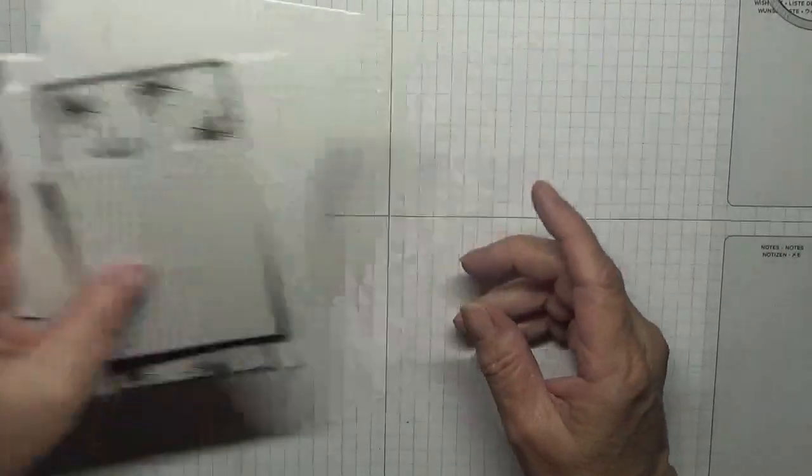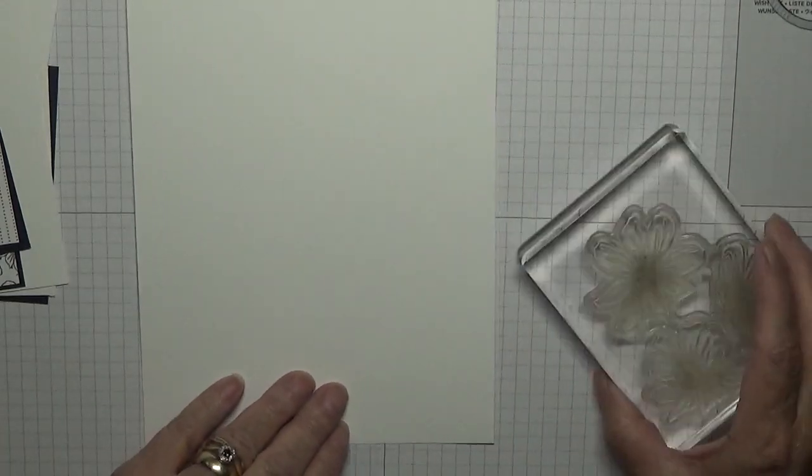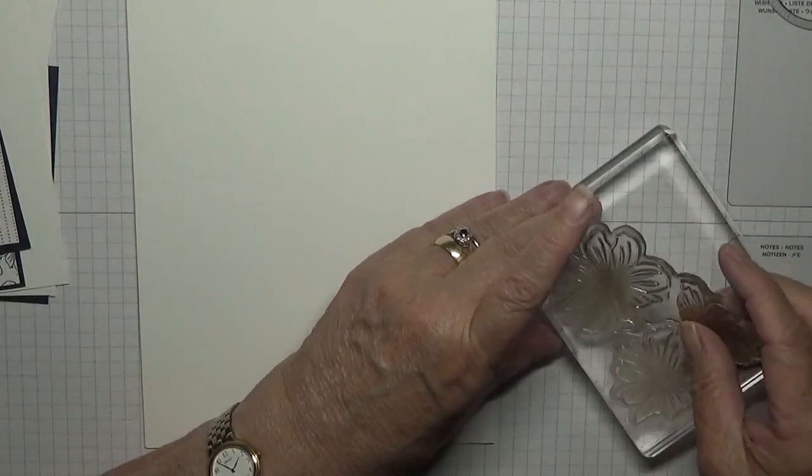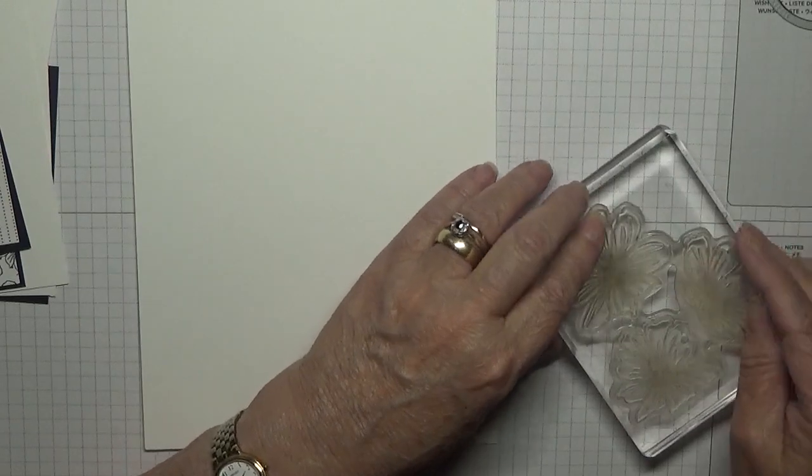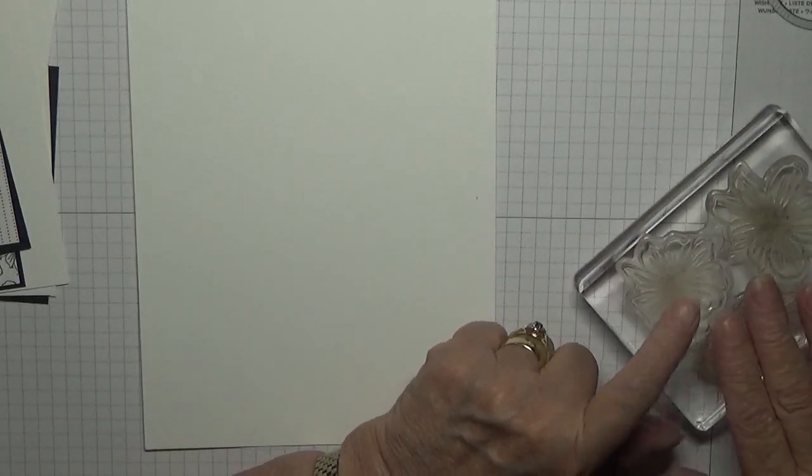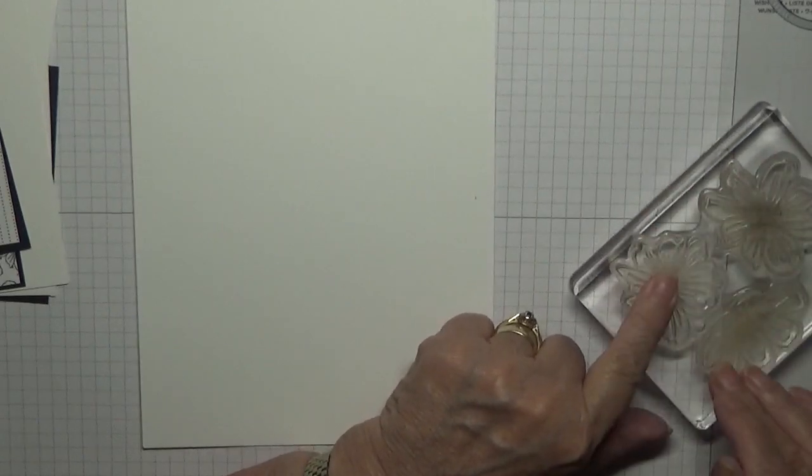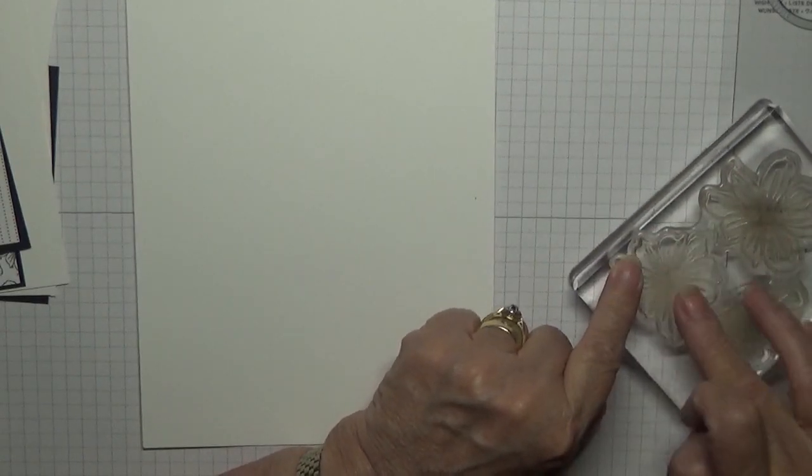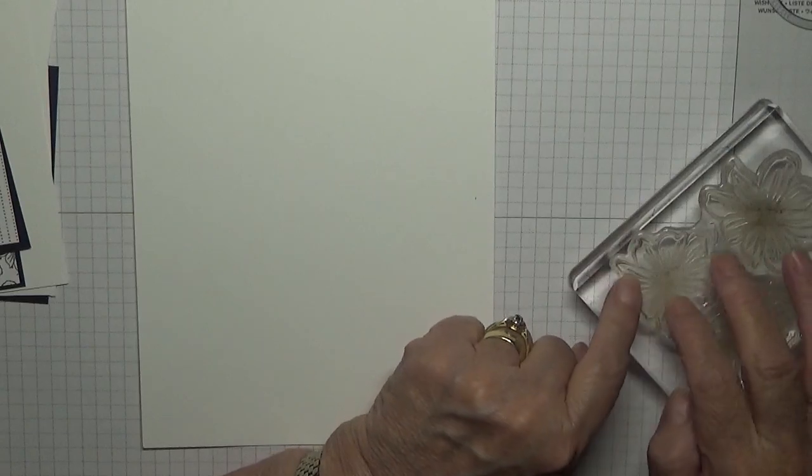Now I need some scrap. I've got my flower stamp and I'm going to use this one. Because I don't want all three, I'm only going to ink up and stamp and cut out by hand, fussy cut that one out.